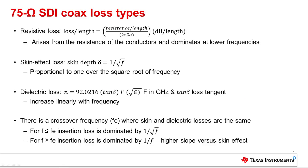Let's look deeper into what contributes to insertion loss and low pass filtering effects of the SDI 75 ohm transmission media. There are three types of losses for SDI 75 ohm coax media. There is resistive loss which is typically specified as DB loss per unit length. This loss predominantly affects low frequency content of the video signal.